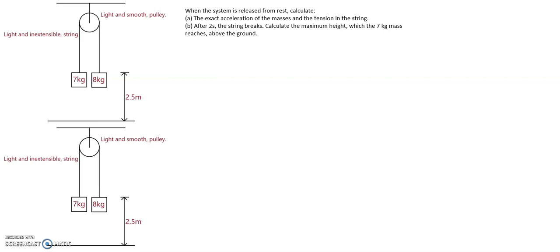In the second diagram below, it is now required to put all the forces acting within the pulley system. For the 8 kilogram mass, we have its weight acting vertically downwards of magnitude 8g. Similarly, for the 7 kilogram mass, its weight is acting vertically downwards of magnitude 7g. Acting upwards in this string will be tension, which I'm going to denote by capital T. Because this string is attached to both masses, it's just one string, so the tension in the left-hand side must also be the same magnitude T.